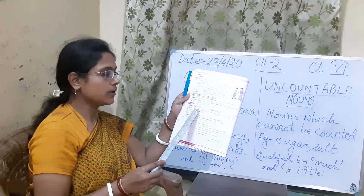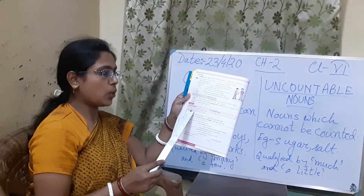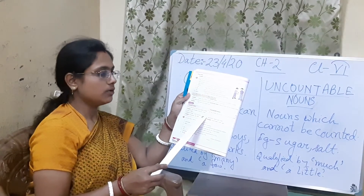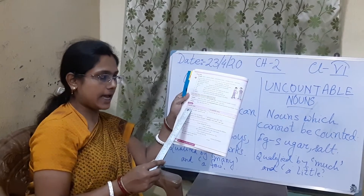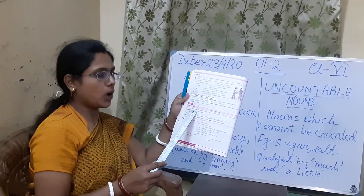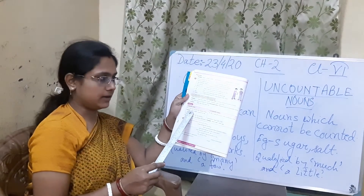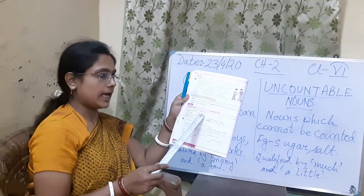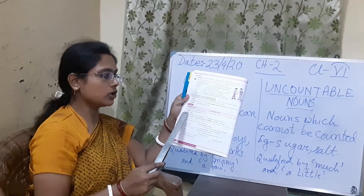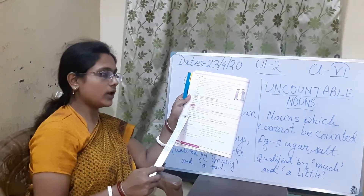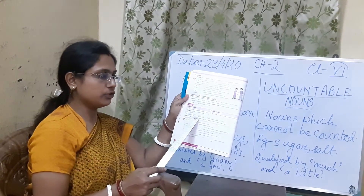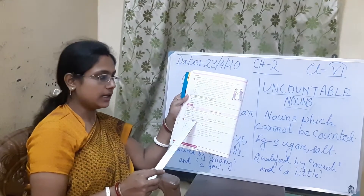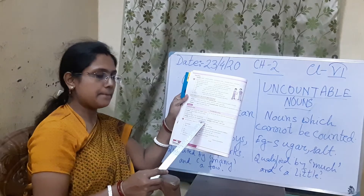The features of countable nouns given in your book: 'a', 'an', and 'one' are used with singular nouns. Like a pen, an apple, a peacock, an axe, a clock, an eagle. Countable nouns are also qualified by 'many', 'a few', and numbers — for example, two pencils, a few students, many pens.